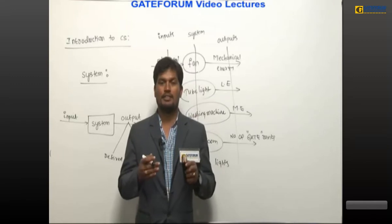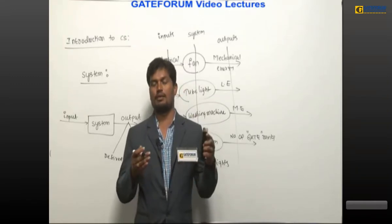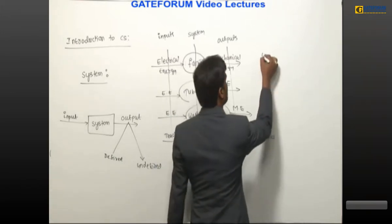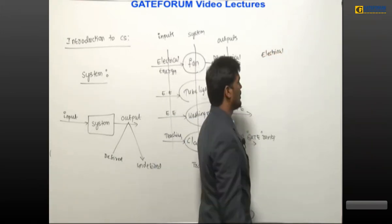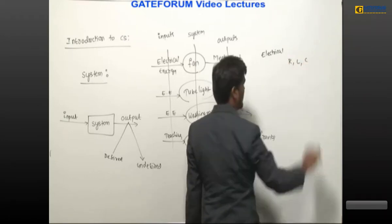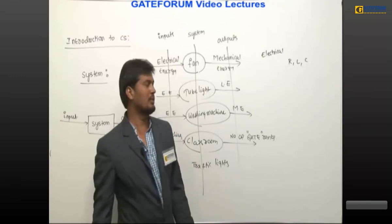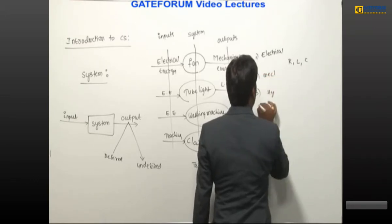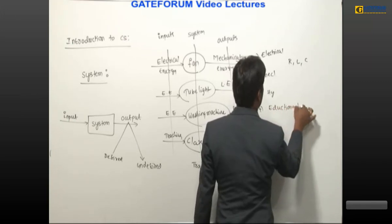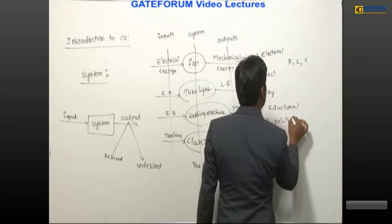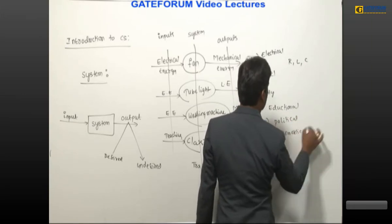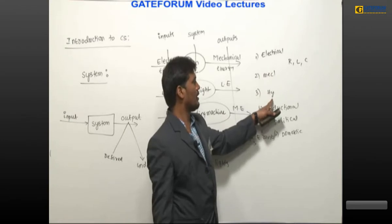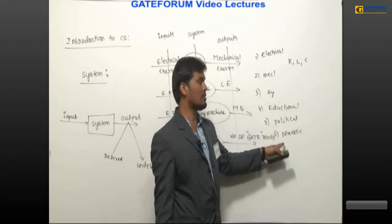Once again: combination of different physical components connected together to perform a certain task is called a system. Practically there are many examples — electrical system, mechanical system, hydraulic system, educational system, political system, domestic system. In an electrical system, the physical components are resistors, inductors, and capacitors.